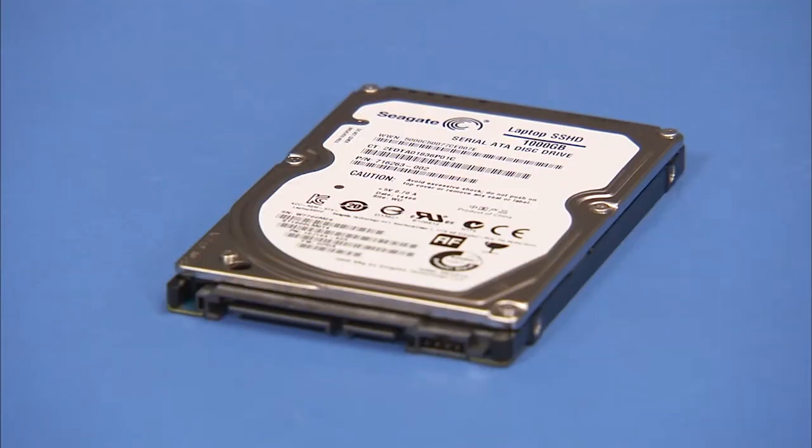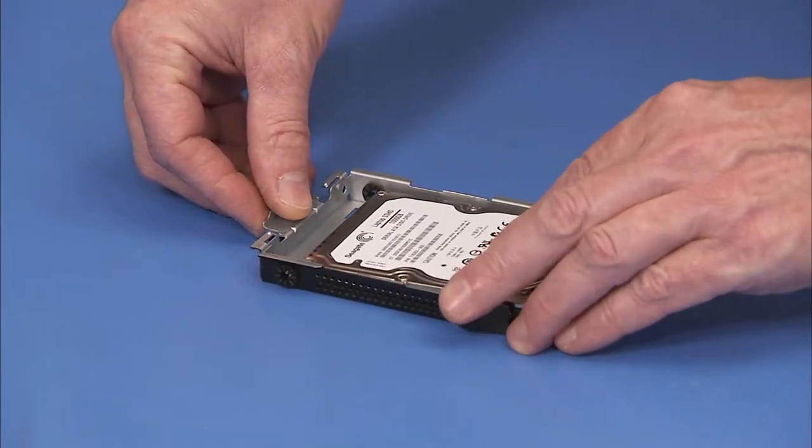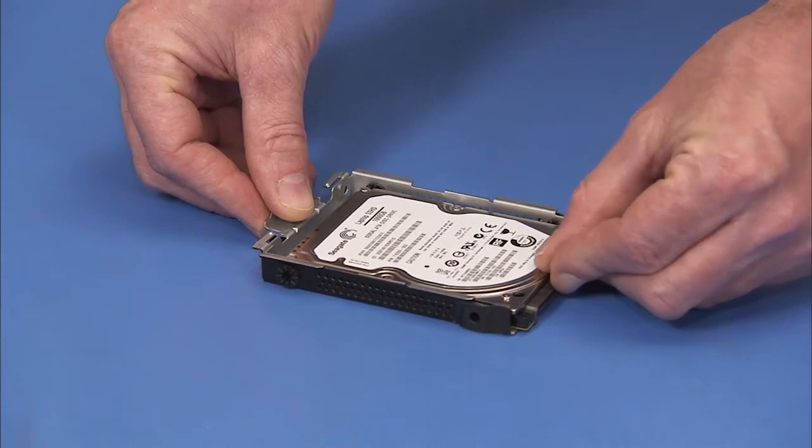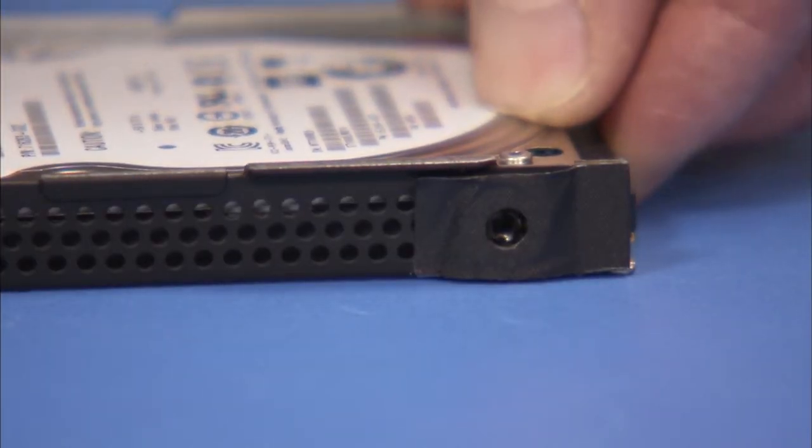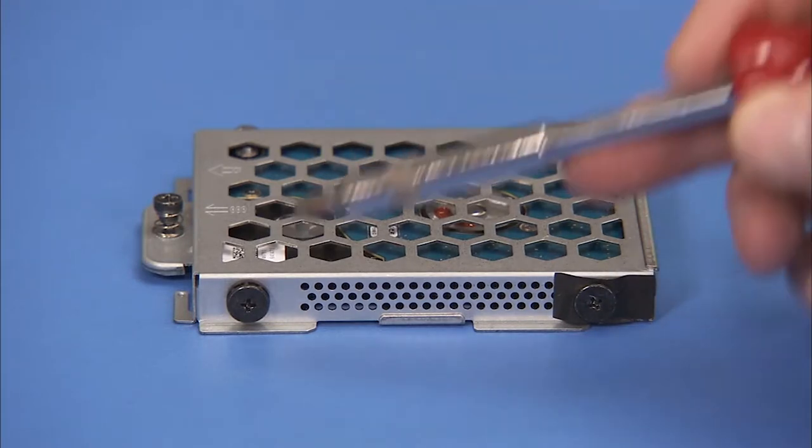To replace the hard drive in the cage, place the drive into the cage until the screw holes on the side of the drive and the cage align. Replace the four black Phillips No. 2 screws to secure the hard drive to the cage.